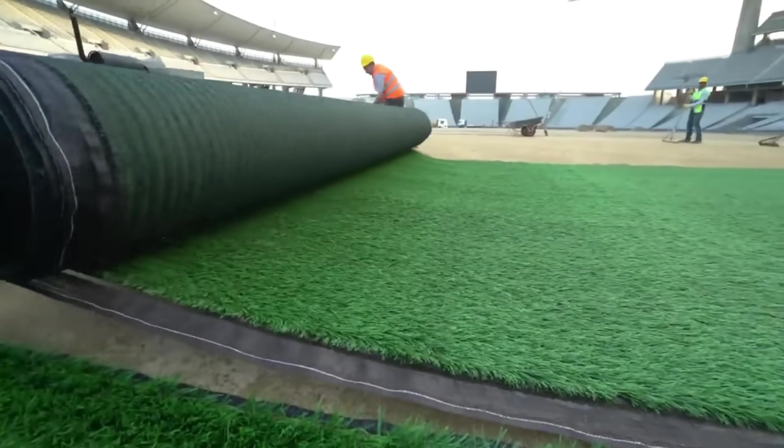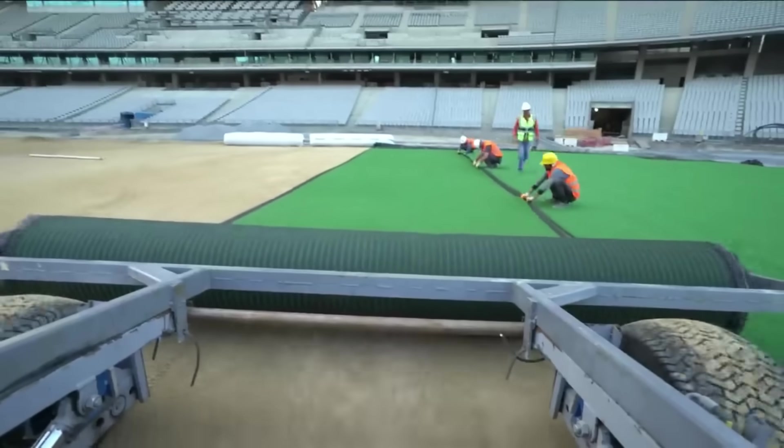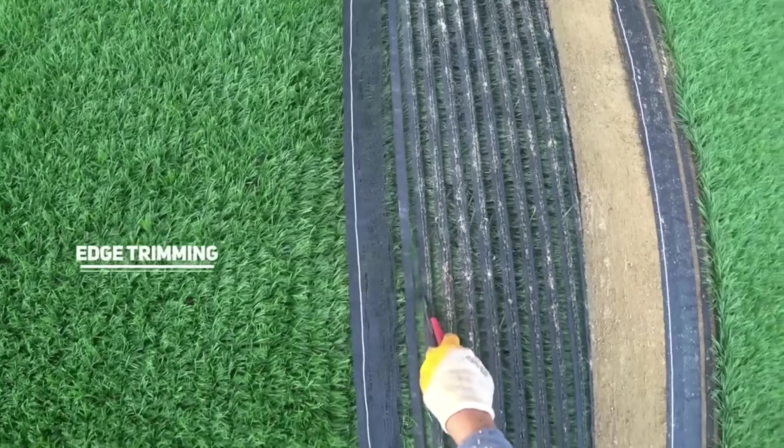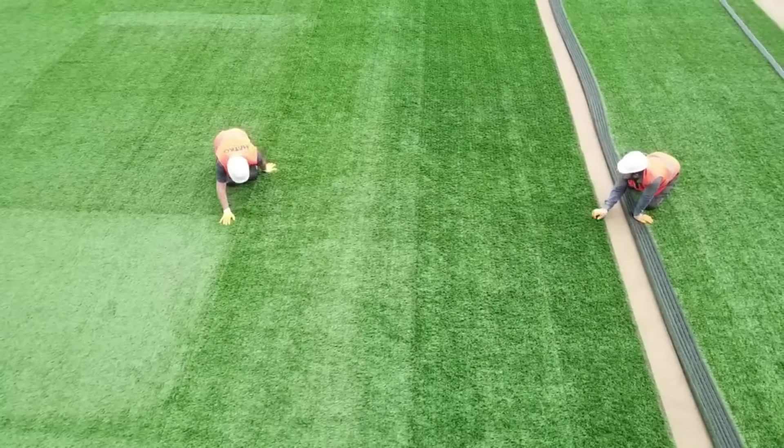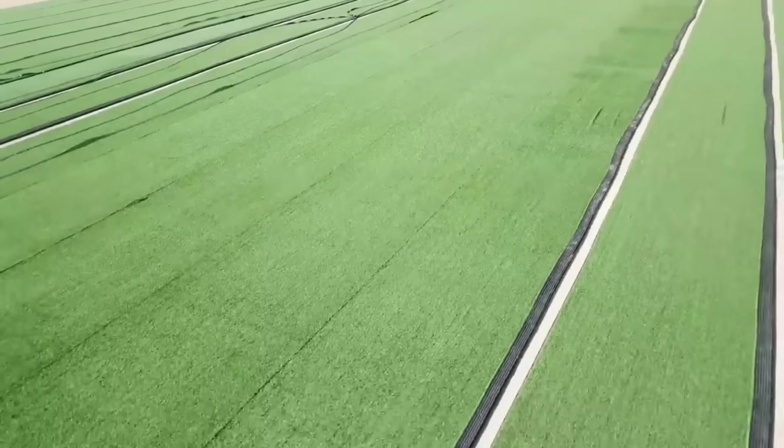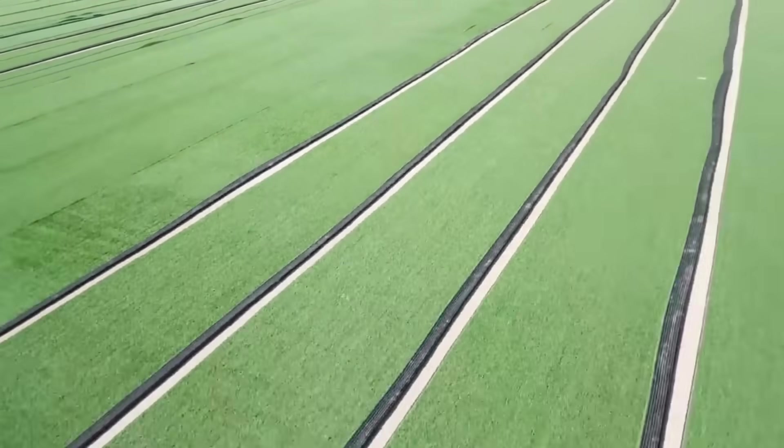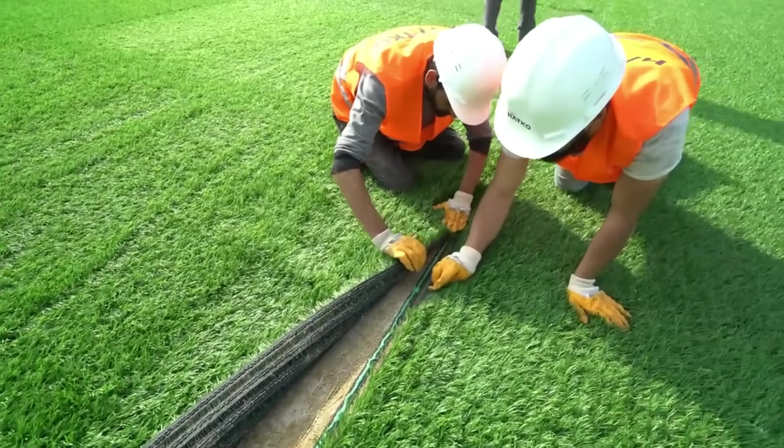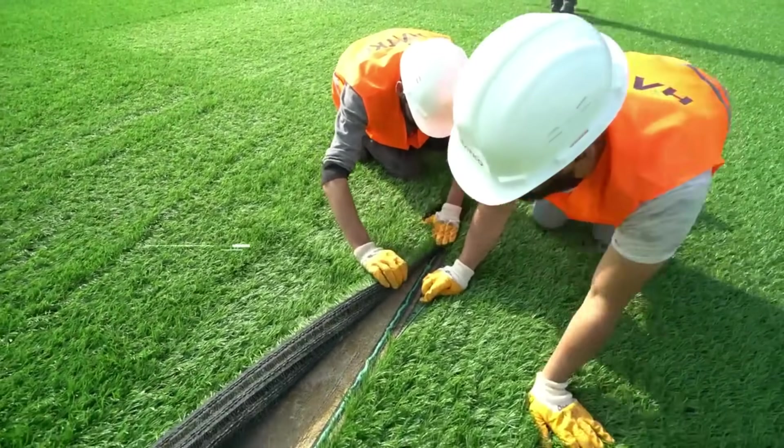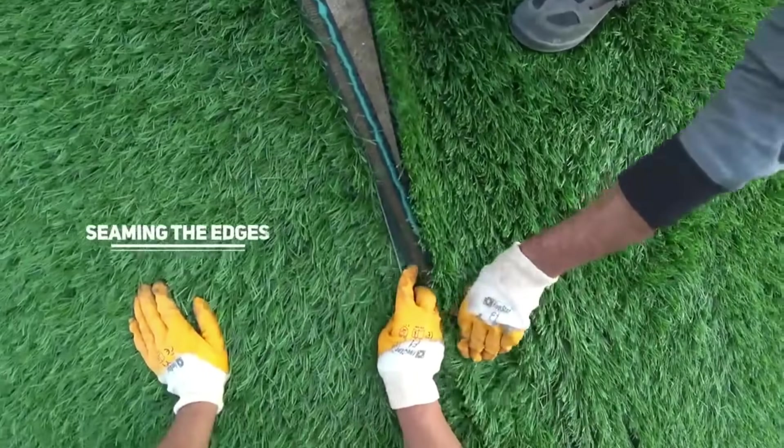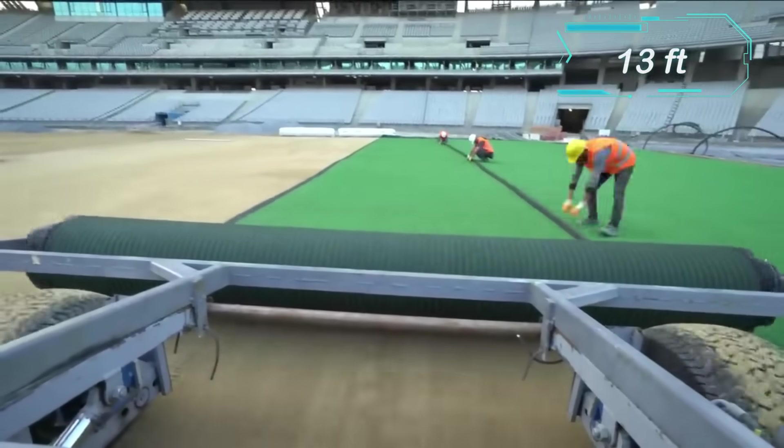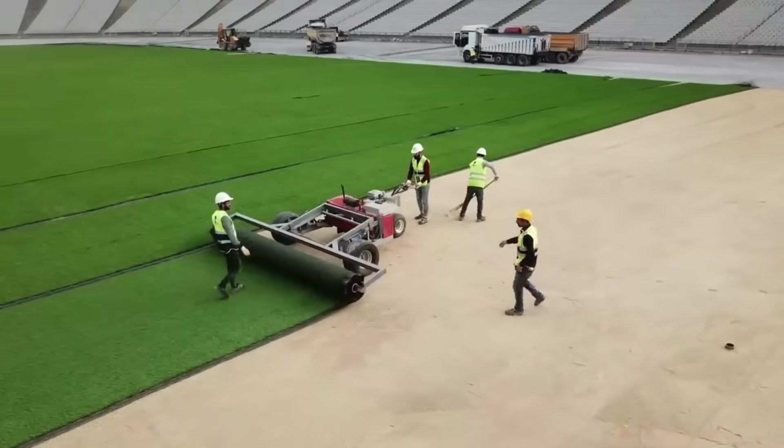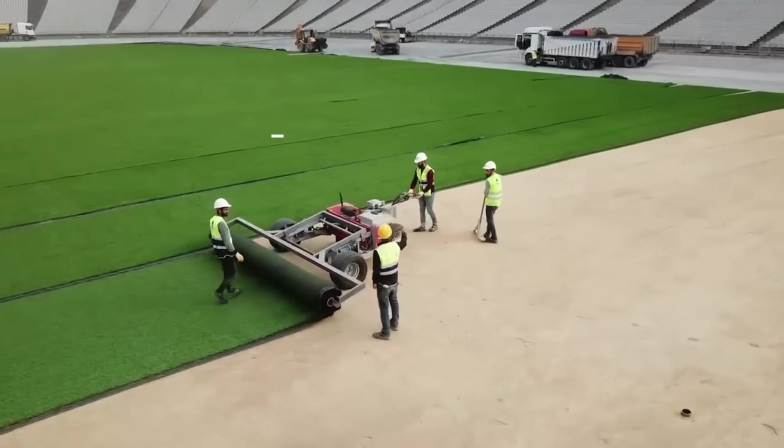Soccer enthusiasts rejoice as a stadium boasting this blend can host thrilling games for approximately 1,000 hours each year without a hitch. What's the secret? Hybrid grass not only looks perpetually well-kept but demands minimal upkeep. Whether you opt for on-the-spot sowing for a quick transformation in just a week, or choose pre-sprouted four-meter-wide rolls for a two to three day installation, Hatco's hybrid grass is your ticket to a vibrant, hassle-free green experience.